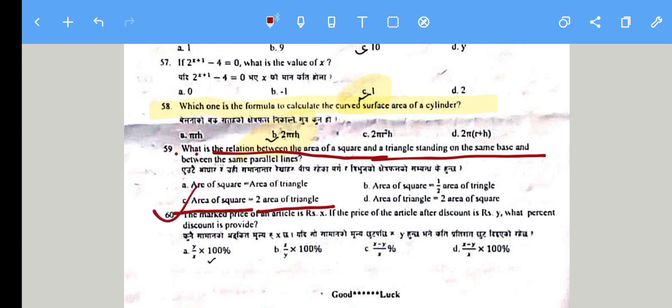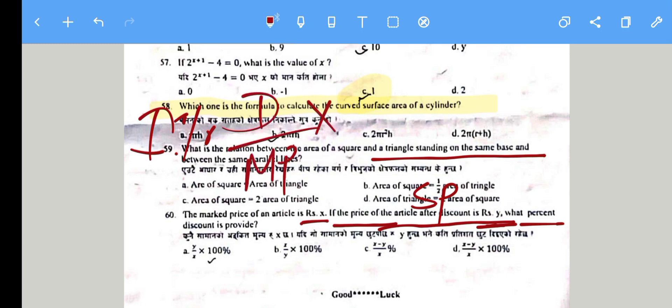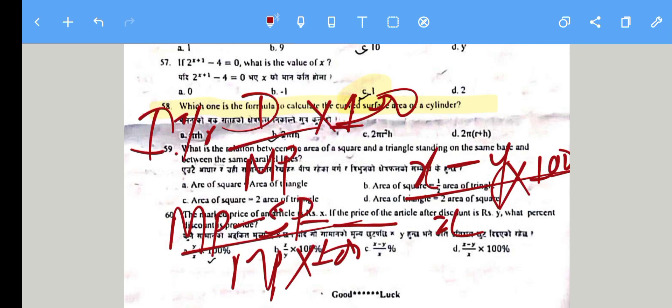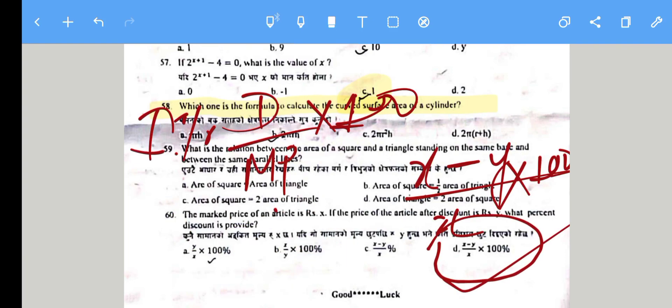Question 60: The marked price of an article is x and the selling price after discount is y. What is the discount percent? Using the formula: Discount percent = (Discount/MP) × 100% = [(MP - SP)/MP] × 100% = [(x - y)/x] × 100%. So option D is correct.